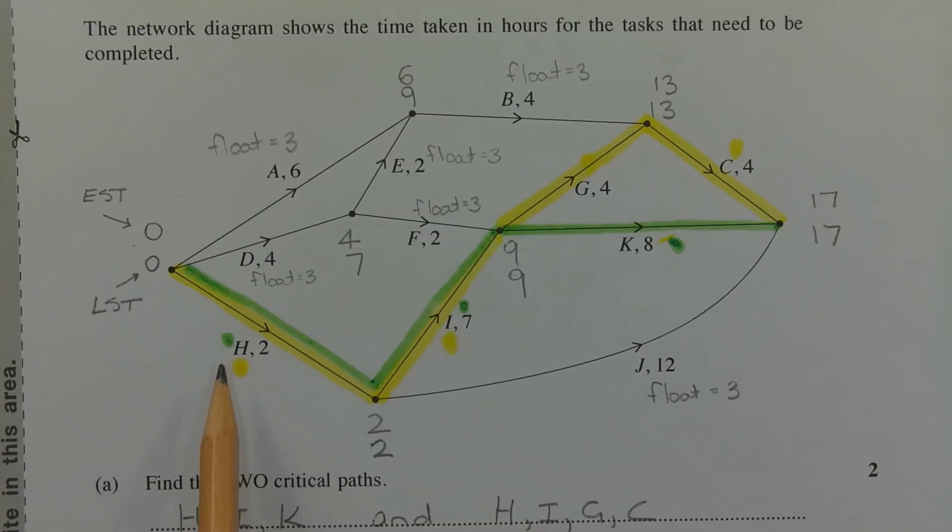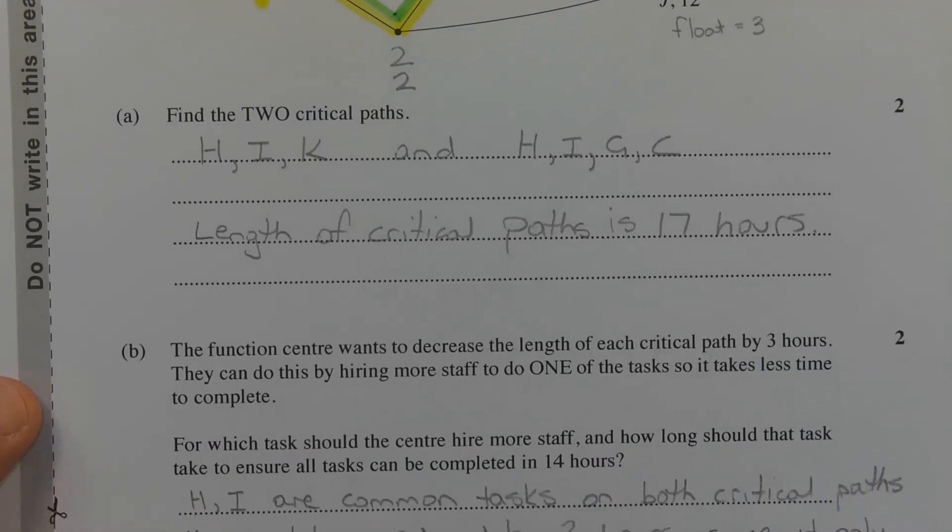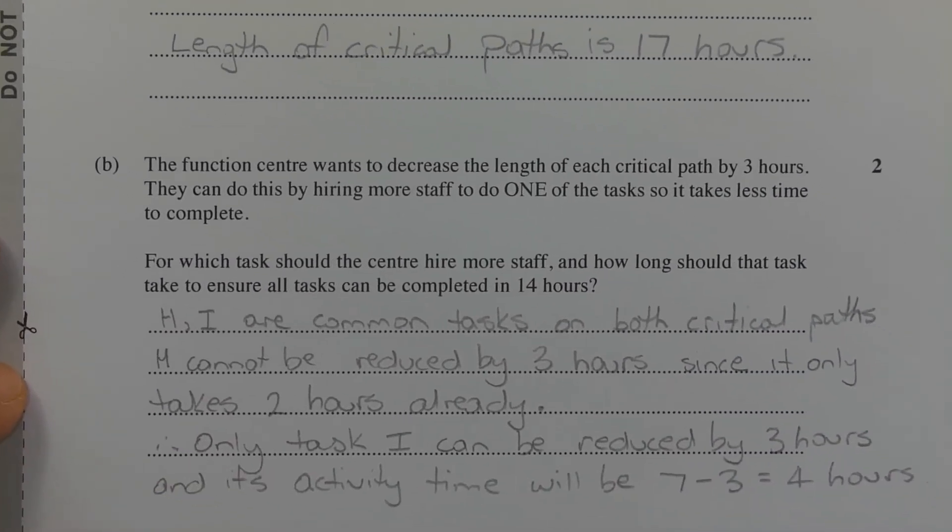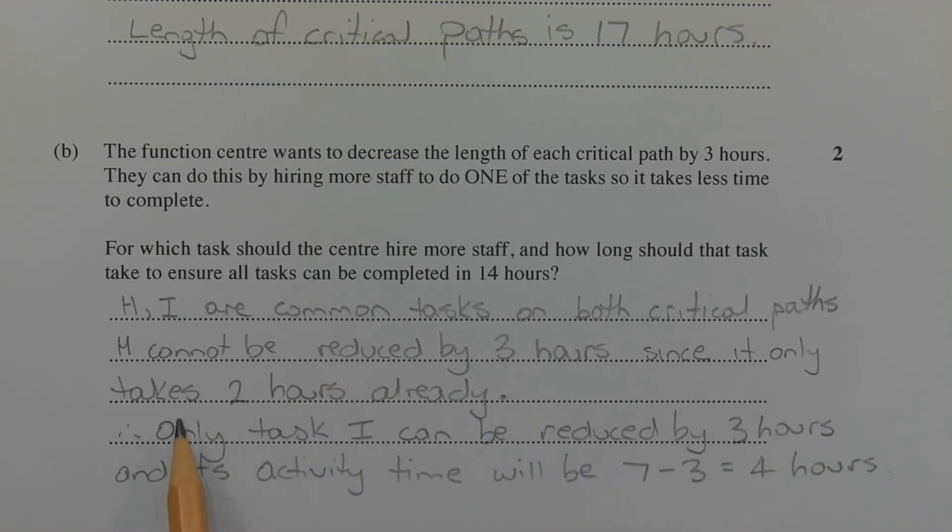So if we choose activity H, well, it's two hours already. We cannot reduce that by three hours. In other words, if we do that, it'll take negative one hours, which doesn't make any sense. So the only task left that we could choose that would reduce both critical paths by three hours is activity I or task I. In my answer, this is what I wrote as my sample solution. H, I are common tasks on both critical paths. H cannot be reduced by three hours since it is already two hours. And only task I can be reduced by three hours, and its activity time will be 7 minus 3, which equals four hours.